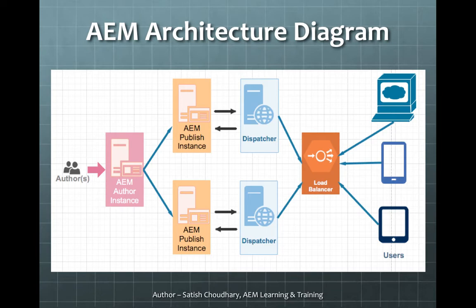It is where the authors go in and create pages, create assets, and create forms. Once they are good with their end product, they publish those pages either directly or via some workflows. Once the page is published, the nodes are replicated from author to publish instance. The publish instances are generally customer-facing — these are the servers which serve the traffic to our end users. In a typical organization, we have a single author instance and multiple publish instances.